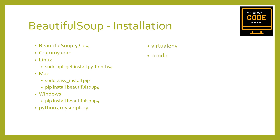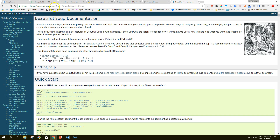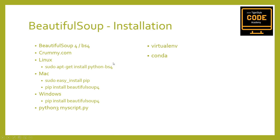Because Beautiful Soup is not a default Python library, it must be installed. We will be using the Beautiful Soup 4 library, also known as bs4, and this is what we're going to call it throughout this tutorial. The complete installation instructions can be found at crummy.com/software/beautifulsoup/bs4/doc — if you Google it you should be able to find it.